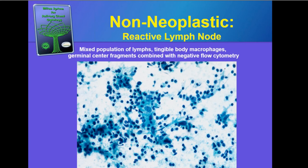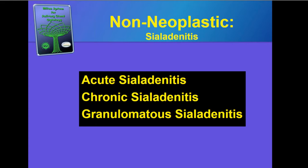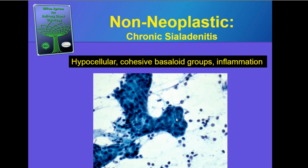In the non-neoplastic category we'll often have aspirates of reactive lymph nodes showing a mixed population of lymphocytes, tangible body macrophages, and germinal center fragments combined with negative flow cytometry. Sometimes you'll have aspirates of sialolithiasis, with background inflammatory cells and actual fragments of the stone, diagnosed as non-neoplastic sialolithiasis. Also in the non-neoplastic category, various aspirates of sialadenitis — including acute sialadenitis, chronic sialadenitis, or granulomatous sialadenitis. Chronic sialadenitis usually shows hypocellular aspirates with cohesive basaloid groups and background chronic inflammation.